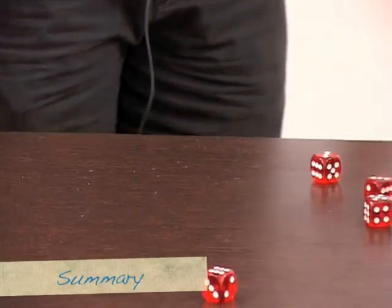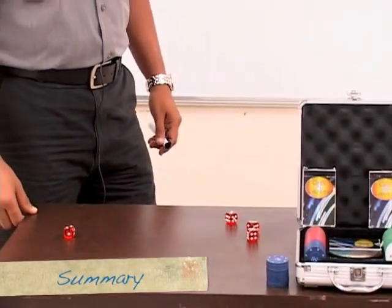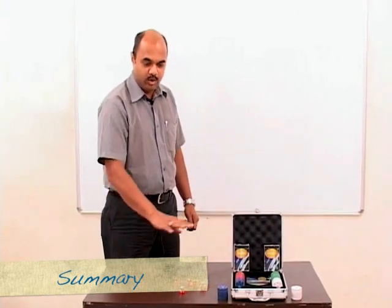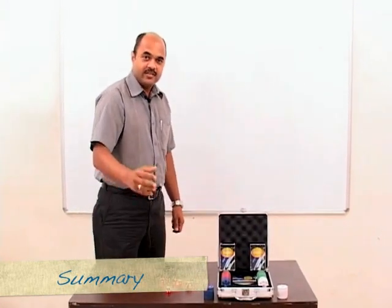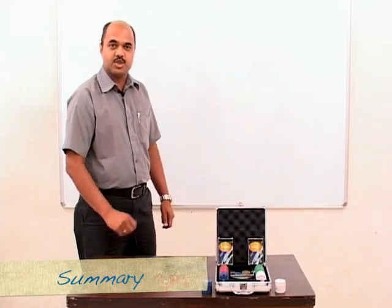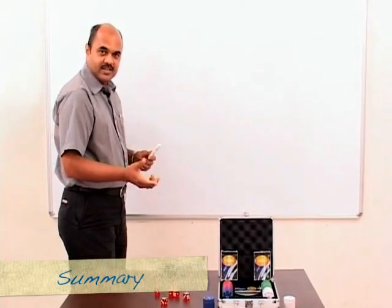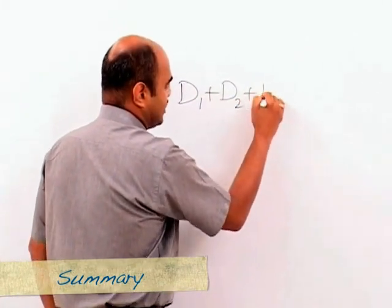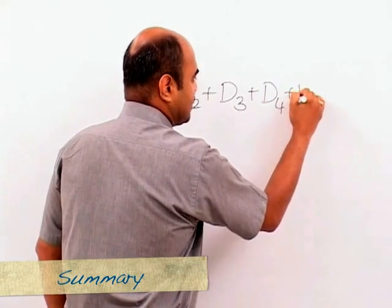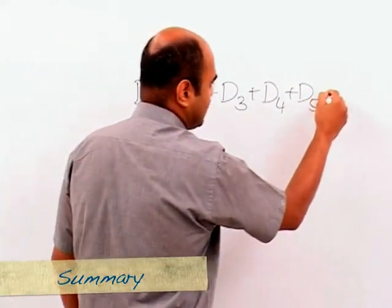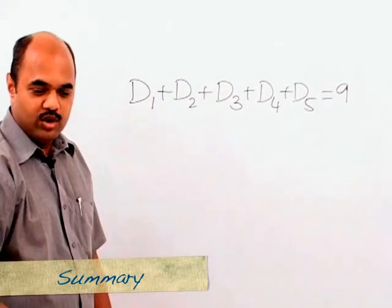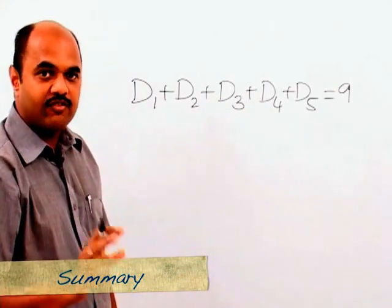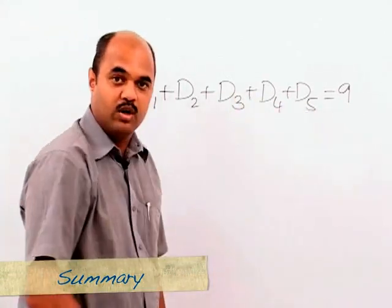Let's get back to our example of rolling five dice. The question was: if five dice are rolled, in how many ways can we get a total of nine? This is an application of distribution of objects. We say D1 + D2 + D3 + D4 + D5 = 9, where no value can be zero. If we assign 1 to each die, we already have a total of five, so we still need four more to be assigned.